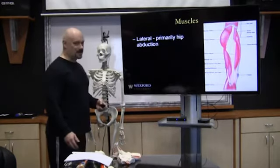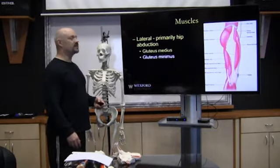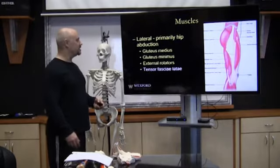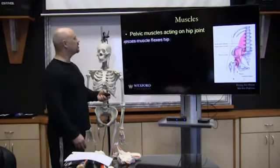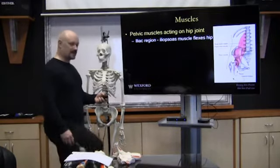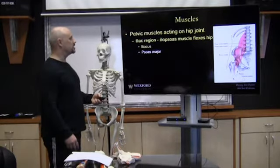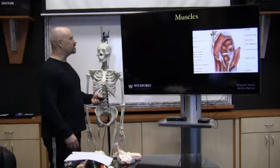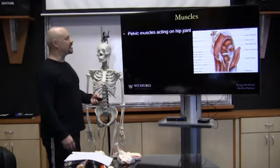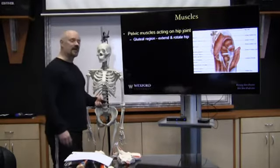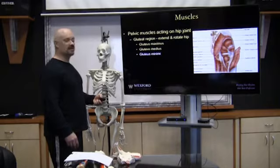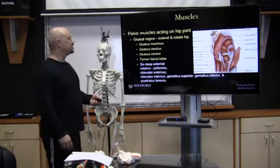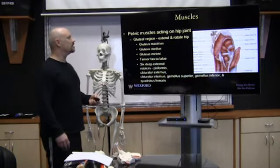Laterally, the primary hip abductors are the gluteus medius, gluteus minimus, the external rotators, and the tensor fascia latae. The pelvic muscles acting on the hip joint in the iliac region are the iliopsoas muscles — the iliacus and psoas major — which flex the hip. In the gluteal region, the muscles extend and rotate the hip: gluteus maximus, gluteus medius, gluteus minimus, tensor fascia latae, and all six deep external rotators.